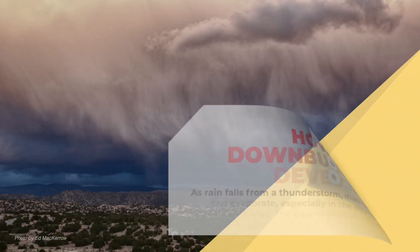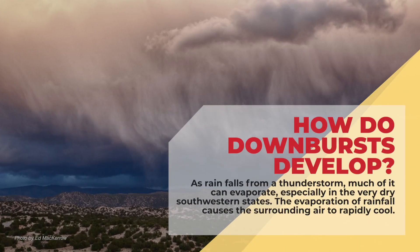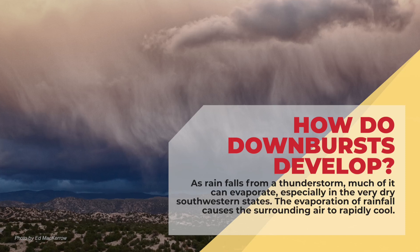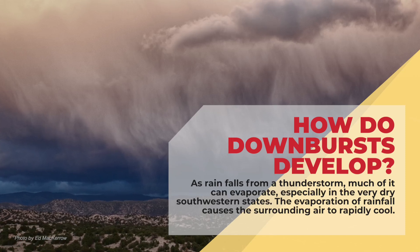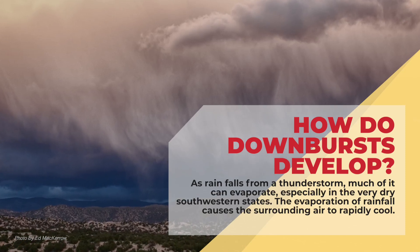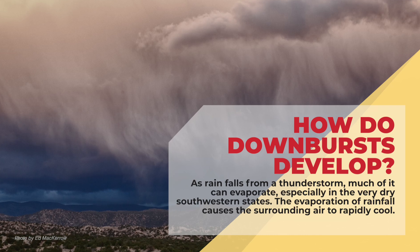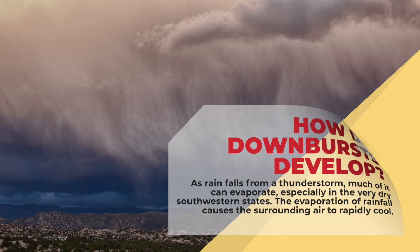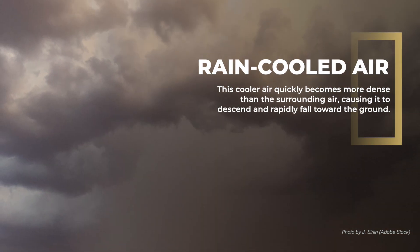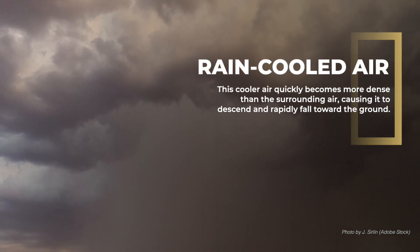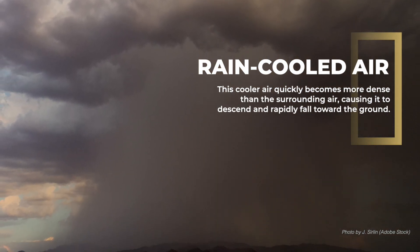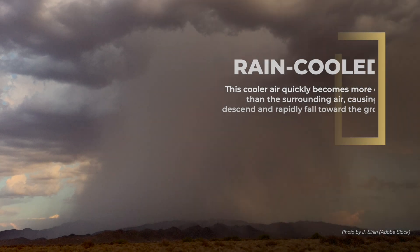So how do downbursts develop? As rain falls from a thunderstorm, much of it can evaporate, especially in the very dry southwestern states. The evaporation of rainfall causes the surrounding air to rapidly cool. This cooler air quickly becomes more dense than the surrounding air, causing it to descend and rapidly fall towards the ground.